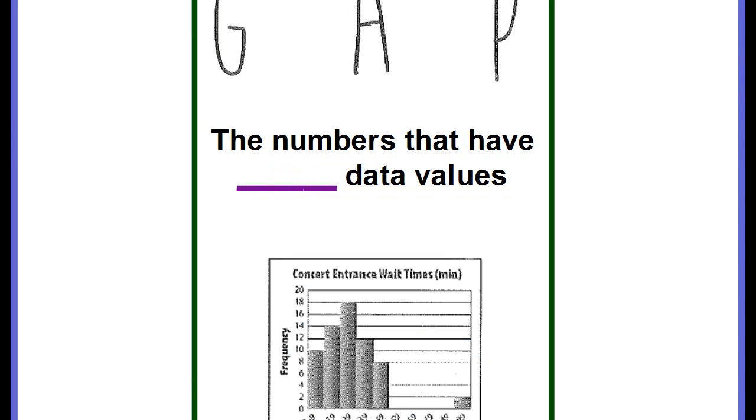Then we have gaps. Gaps are the numbers that have no data values. Looking at this histogram, you could see that the 50 to 59, 60 to 69, 70 to 79, and the 80 to 89 range, there is no bar here. That means there is no data for those numbers. This is what we call a gap. There is a gap from 50 to 89.